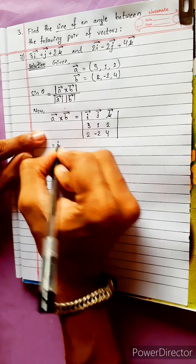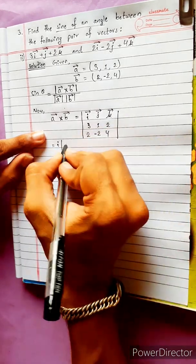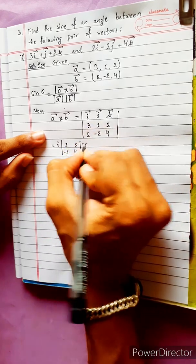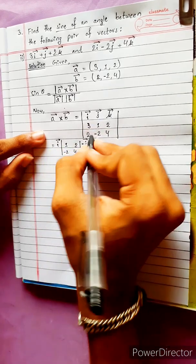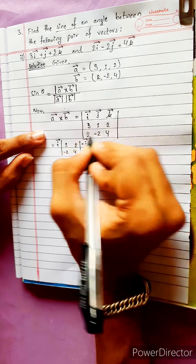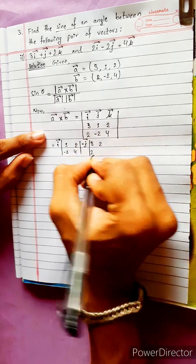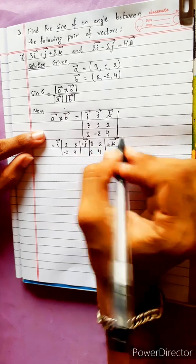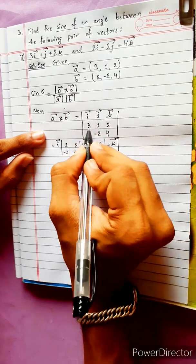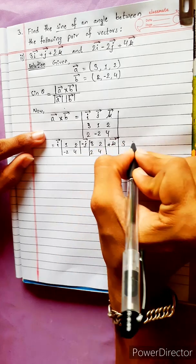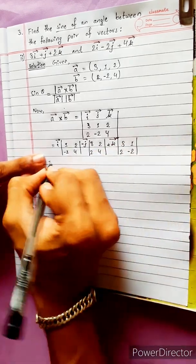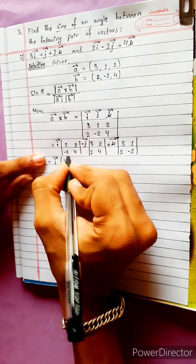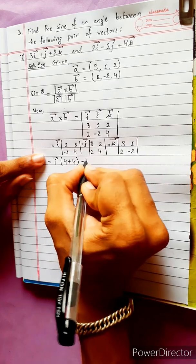It equals i times the submatrix (1, 2; minus 2, 4), minus j times the submatrix (3, 2; 2, 4), plus k times the submatrix (3, 1; 2, minus 2). Expanding: i(4 minus minus 4) minus j(12 minus 4) plus k(minus 6 minus 2).